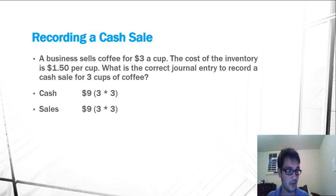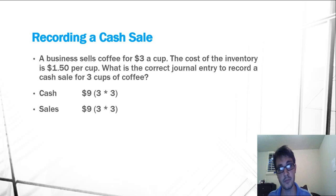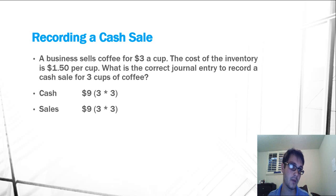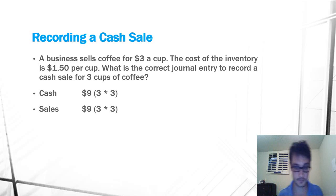So first we have to do some basic calculations. We know that the cups of coffee sell for $3 a cup and we know that we sold three. So three times three equals $9 in cash sales that we're receiving. So we know that we're increasing our cash and we have a $9 sale.